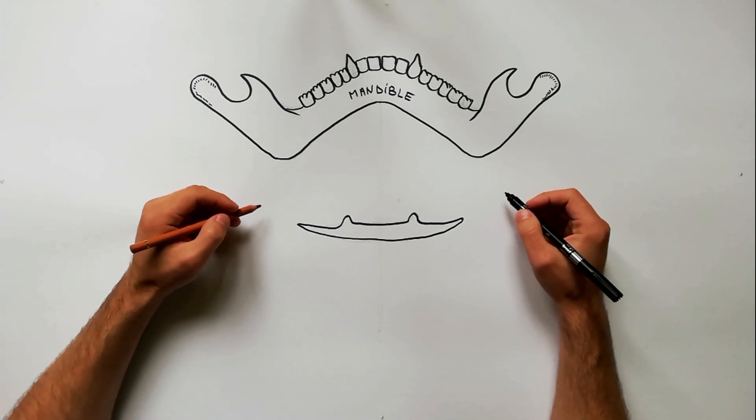The Submental Triangle is an unpaired median triangle on the front of neck below the chin and above the hyoid bone.